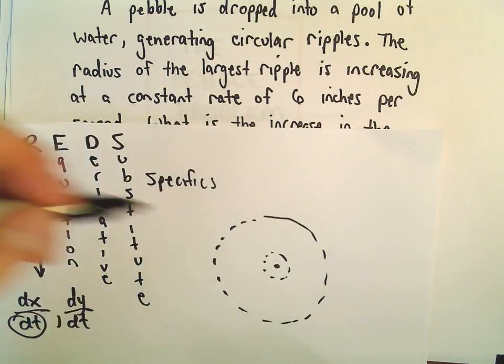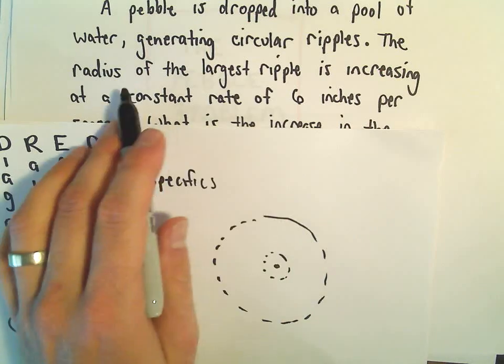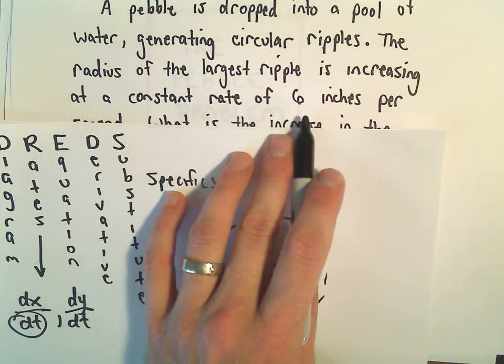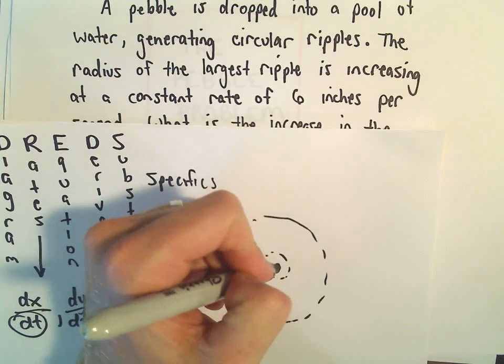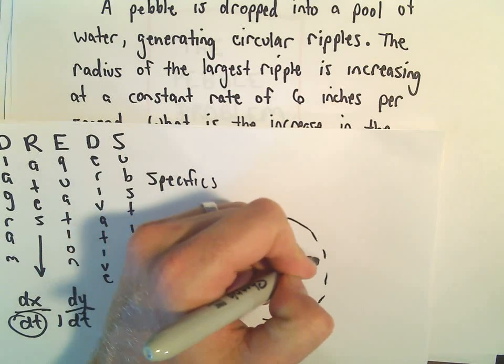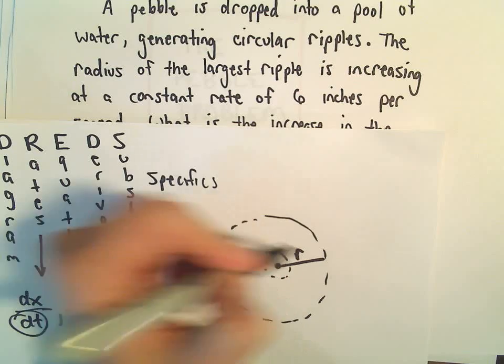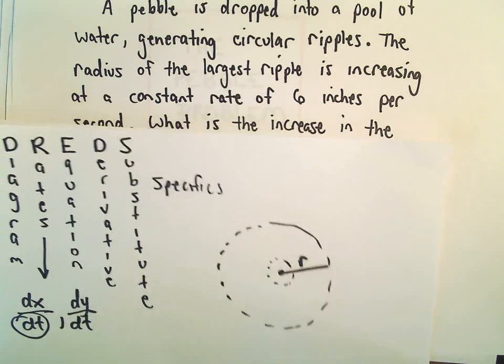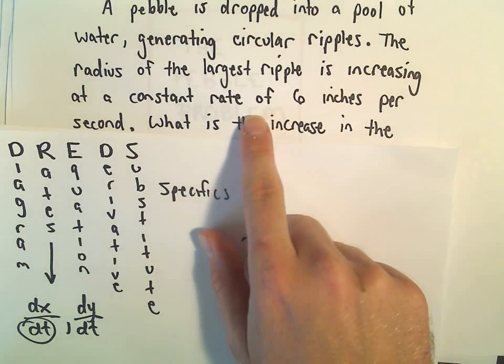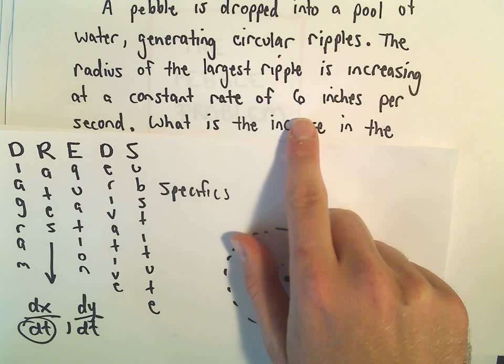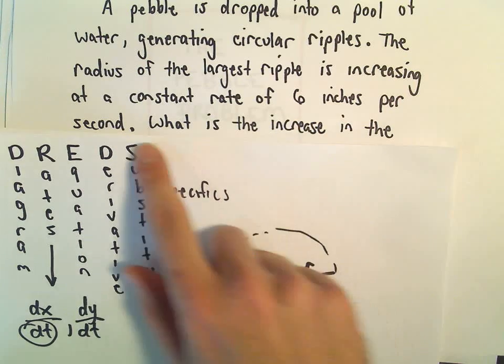So they tell us that the radius of the largest ripple is increasing at a constant rate of 6 inches per second. So I'm just going to suppose that from where the pebble was dropped out to the largest ripple, that has a radius of r. So now I can express this idea that the rate is changing, that the rate of change is 6 inches per second.